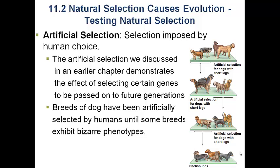Remember that one of the observations that Darwin made that allowed him to come to the conclusions he did in his book 'On the Origin of Species' was the observation of domestic animals in his native England. He looked around and saw that animals varied to a large extent in their phenotype, and he wondered why that was. He came to the conclusion that it was the result of humans selecting for certain traits that they liked.